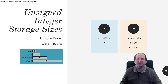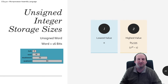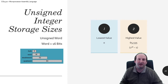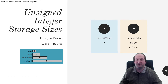Unsigned word: 16 bits of storage. If there were 16 switches and all of them were in the off position, the smallest value you could represent would be zero. However, if all of them were switched to the on condition, the largest value would be 65,535 — or two to the sixteenth power minus one.